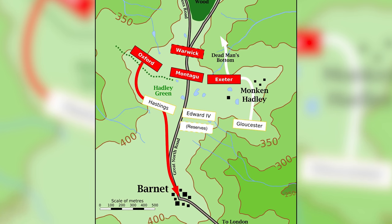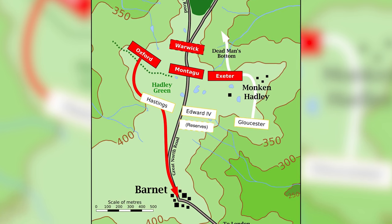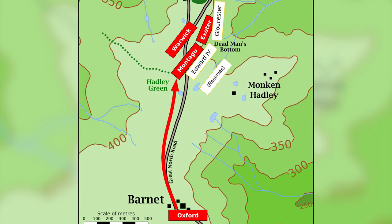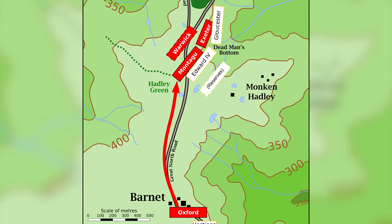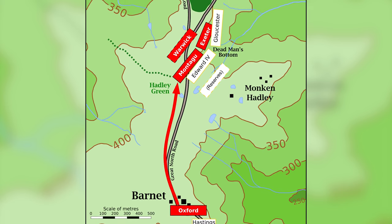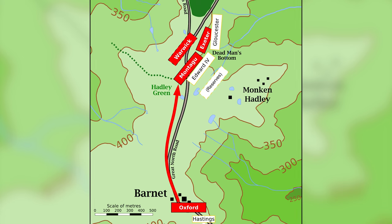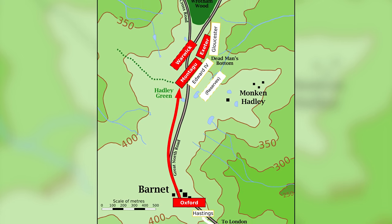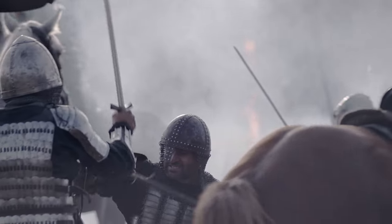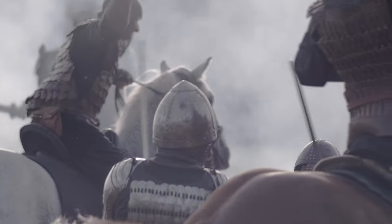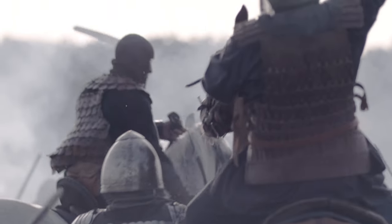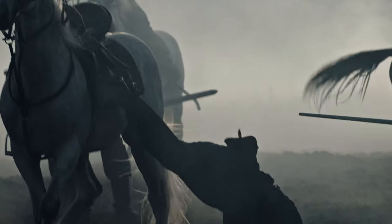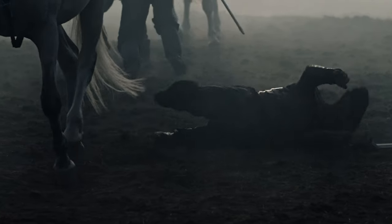Attempting to regroup, Lord Oxford rallied some of his men and returned from Barnet. However, instead of attacking the rear of the Yorkist centre as intended, Oxford's forces encountered the Lancastrians. In the confusion of the fog and the chaos of battle, the Lancastrian troops mistakenly identified Oxford's men as Yorkists. They unleashed a barrage of arrows followed by a fierce charge, believing they were engaging the enemy. In the midst of this confusion, the Earl of Oxford, fearing betrayal within Warwick's army, withdrew from the field with those men he could gather.